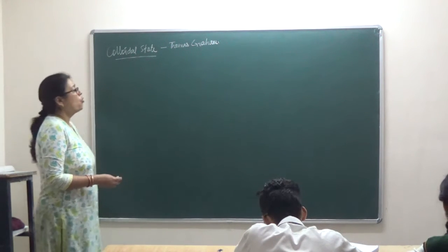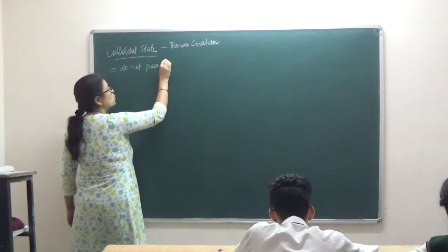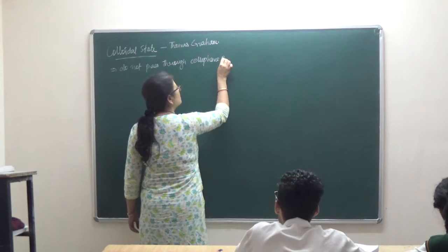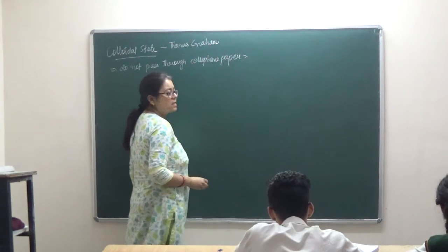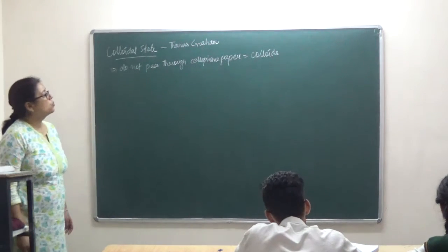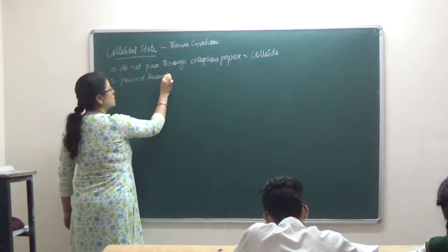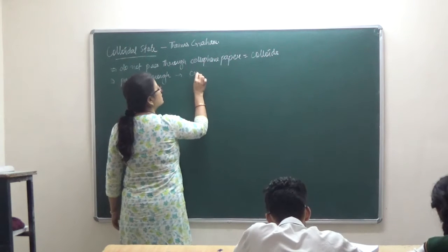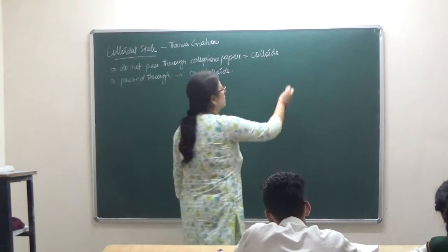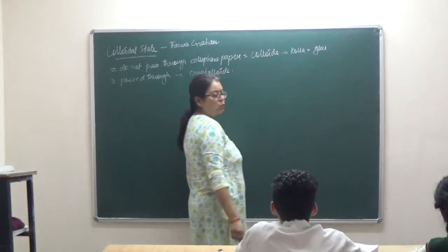Depending upon that observation, he said that all those substances which do not pass through cellulose paper were known as colloids, whereas all those which passed through cellulose paper were known as crystalloids.